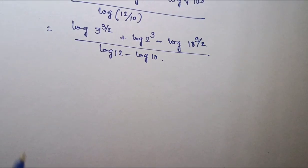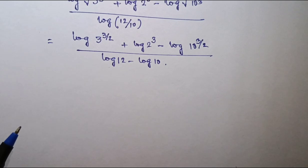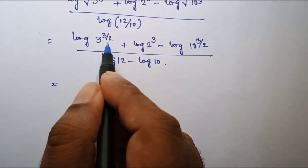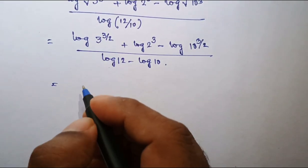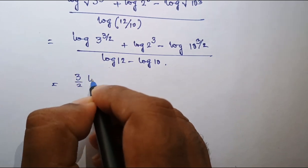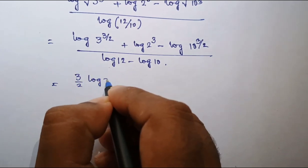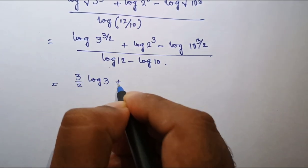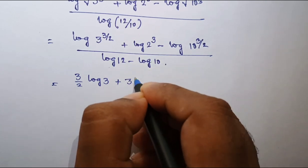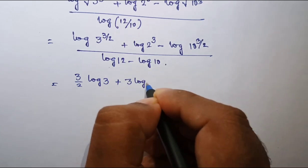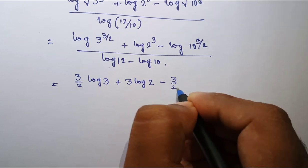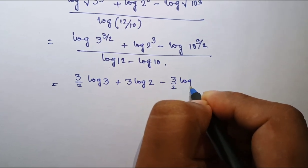Now, since log a to the power b is b log a, this can be written as 3 by 2 into log 3. Similarly, this expression can be written as 3 log 2, and this one is 3 by 2 of log 10.